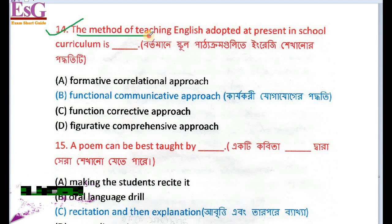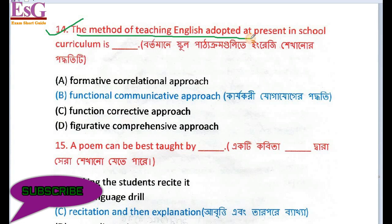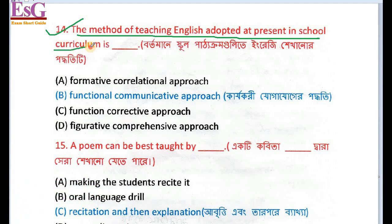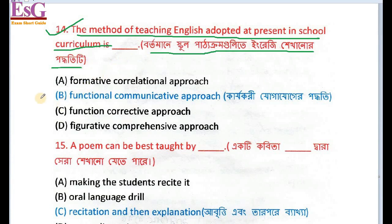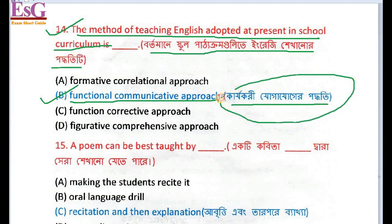The method of teaching English adopted at present in the school curriculum — the method of teaching in school is called the Functional Communicative Approach. The answer is the Formal Communicative Approach, and the evaluation of this approach in the classroom relates to an English playlist.